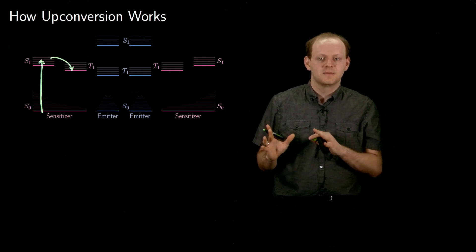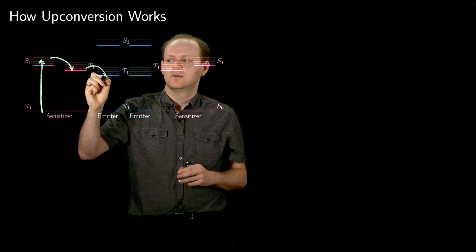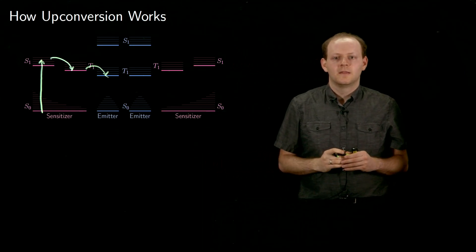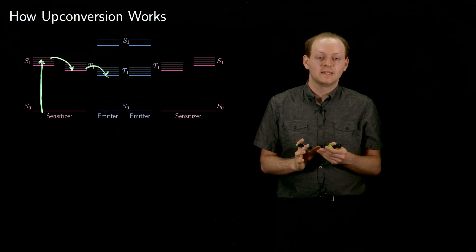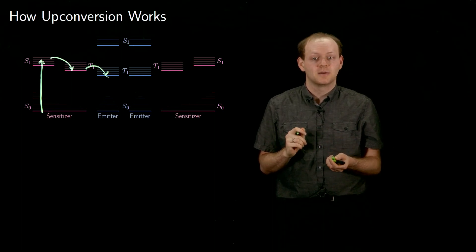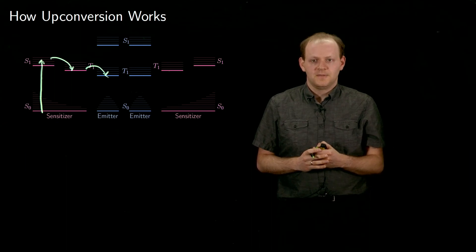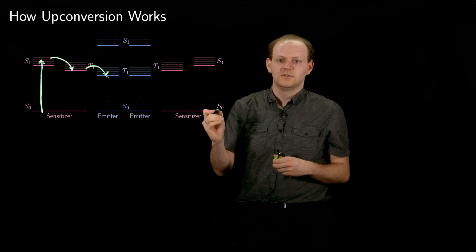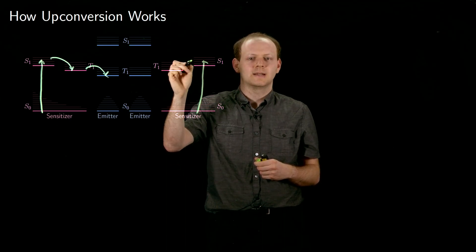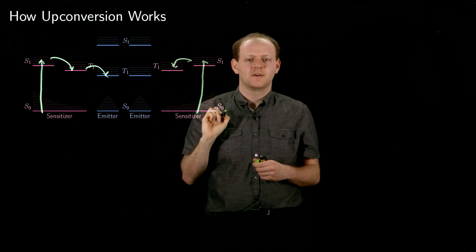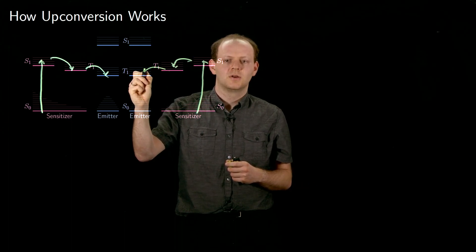Next, the triplet state needs to be transferred from the sensitizer molecule to an emitter molecule. This happens when a sensitizer molecule in a triplet state comes close to an emitter molecule in a ground state. The mechanism is that electrons are exchanged between the sensitizer molecule and the emitter molecule, which allows the energy from the triplet state to move. These processes need to happen many times in parallel, so in some other molecule the sensitizer ground state absorbs light, becoming a singlet excited state, and that singlet excited state is converted into a triplet excited state. Then the triplet excited state moves from the sensitizer to the emitter.